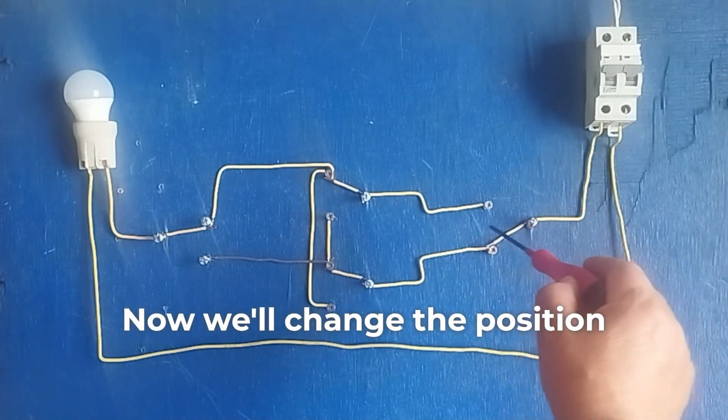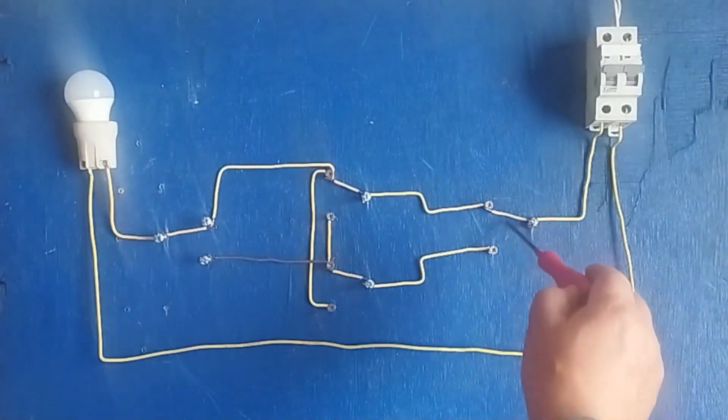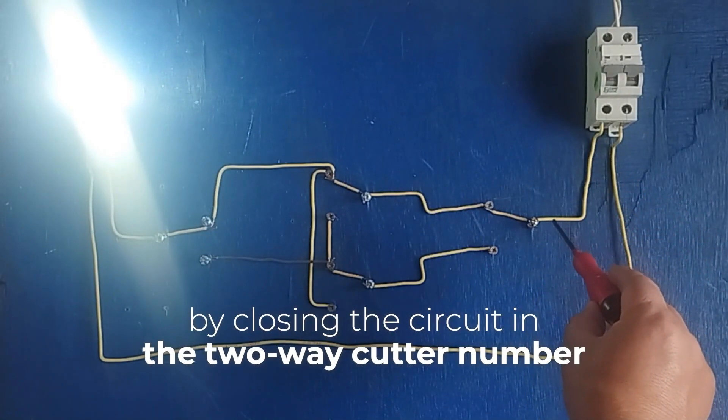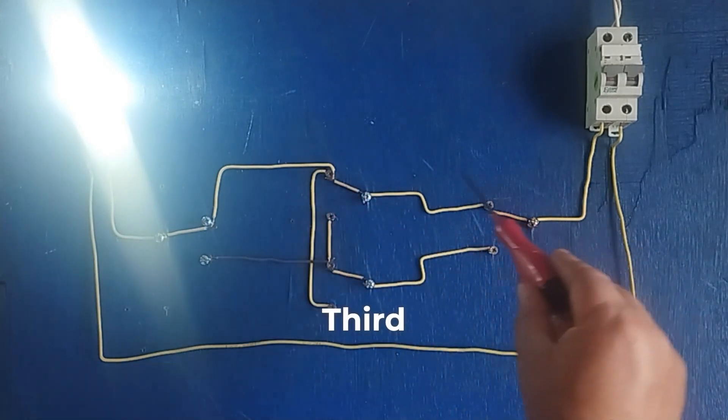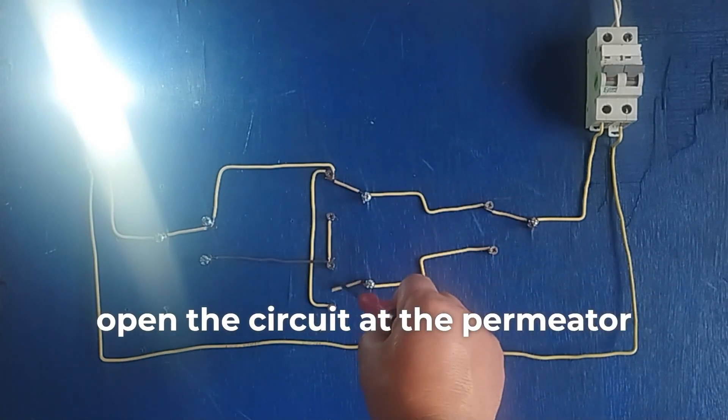Now we'll change the position of cutter number one, which is the two-way or round trip cutter, by closing the circuit in the two-way cutter number one. Third, we adjust the permutator or open the circuit at the permutator or electrical switch.